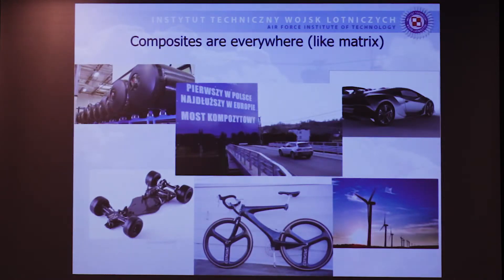Bicycles are more and more often made from composites. Why? Because they are lightweight — much more lightweight than aluminum alloy — and quite durable. One of the greatest advantages of composites is that you can model the shape as you want, giving you the possibility to create new designs and new styles. In the renewables space, the longest bridge in Europe has been made from polymer-based composites using carbon fiber and glass fiber, located in the Podkarpatska region.